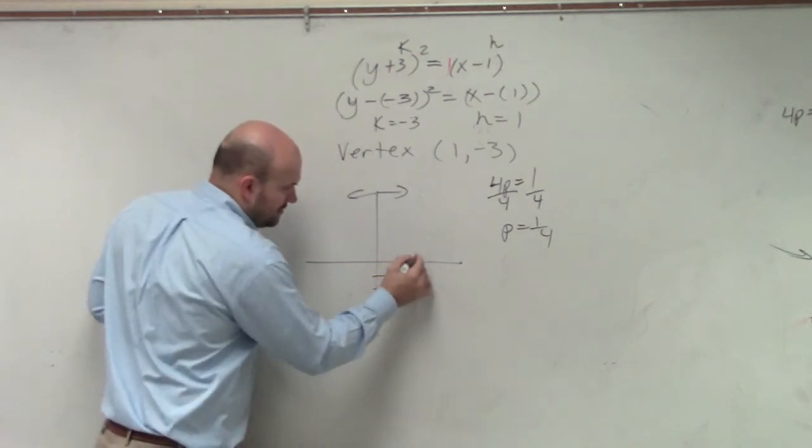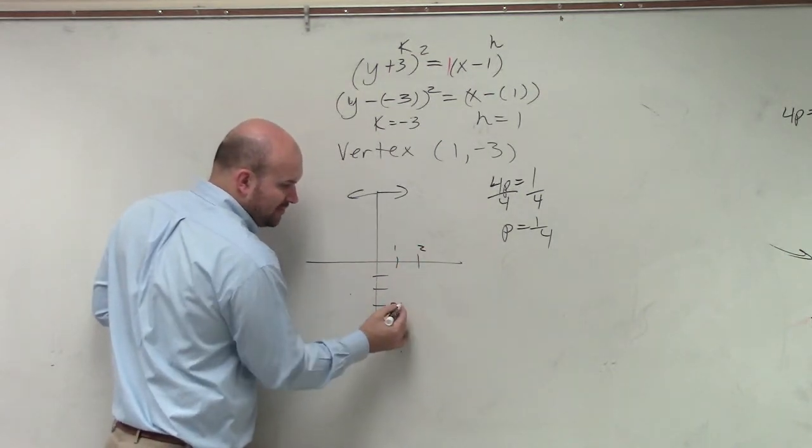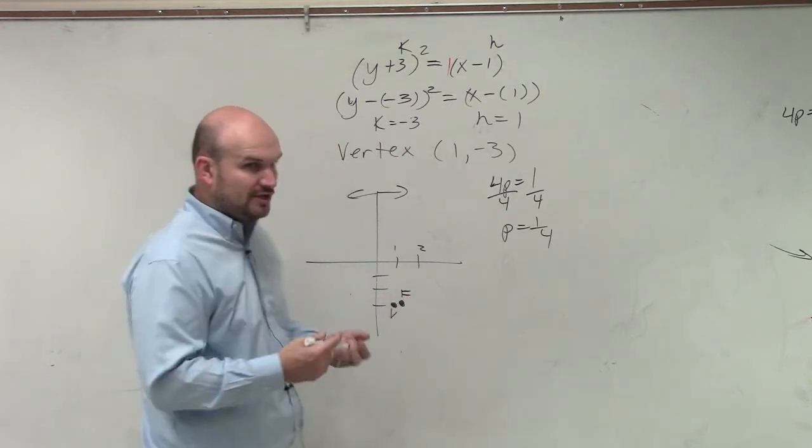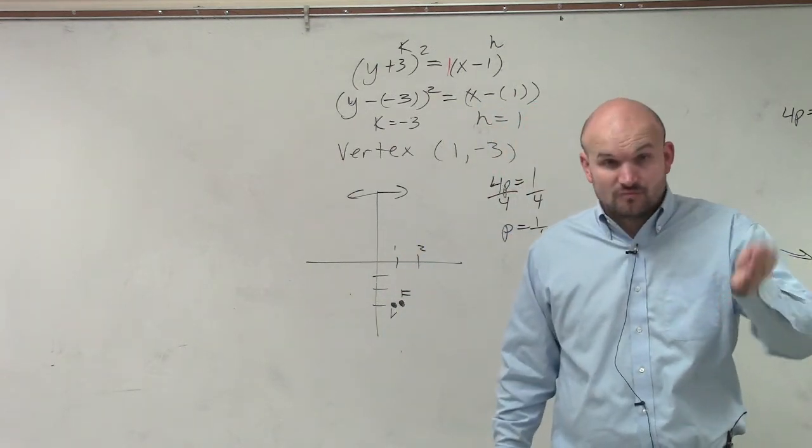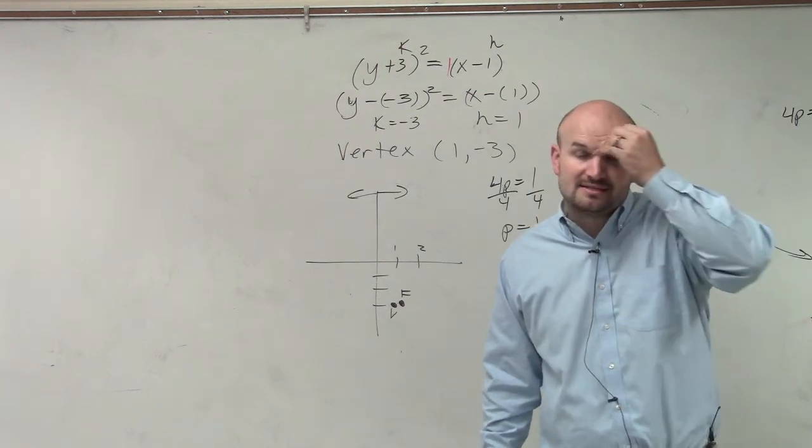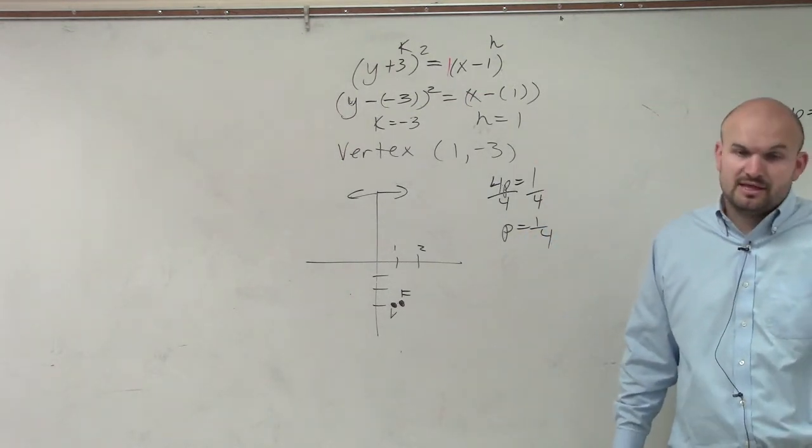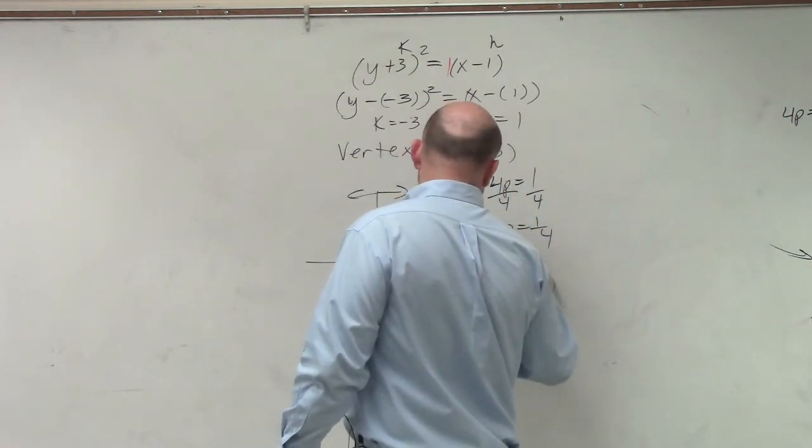So here's 1 and here's 2. If I'm at 1 and I'm going 1 fourth to the right, how far did I go? I just went 1 and 1 fourth. That's how far you traveled. Or you could rewrite 1 as 4 fourths, and then plus 1 fourth is 5 fourths.